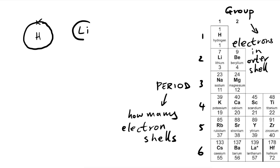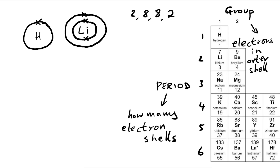Lithium is in group one but it's in period two, which means it has two electron shells. We know the outer shell must have one, but how many are on the inner shell? Well, we know electrons fill up in the form of two, eight, eight, two. If the first shell is full it's going to have two; the second shell full is going to have eight.